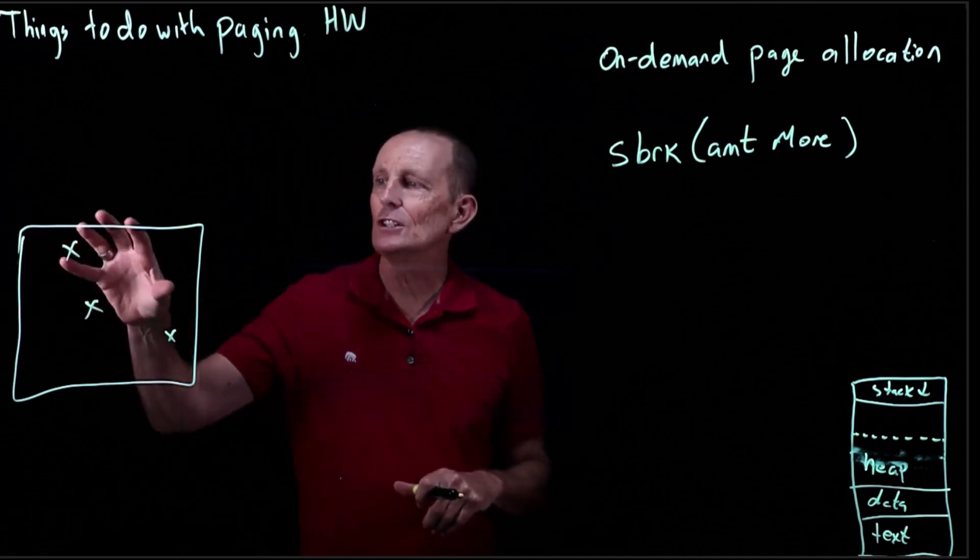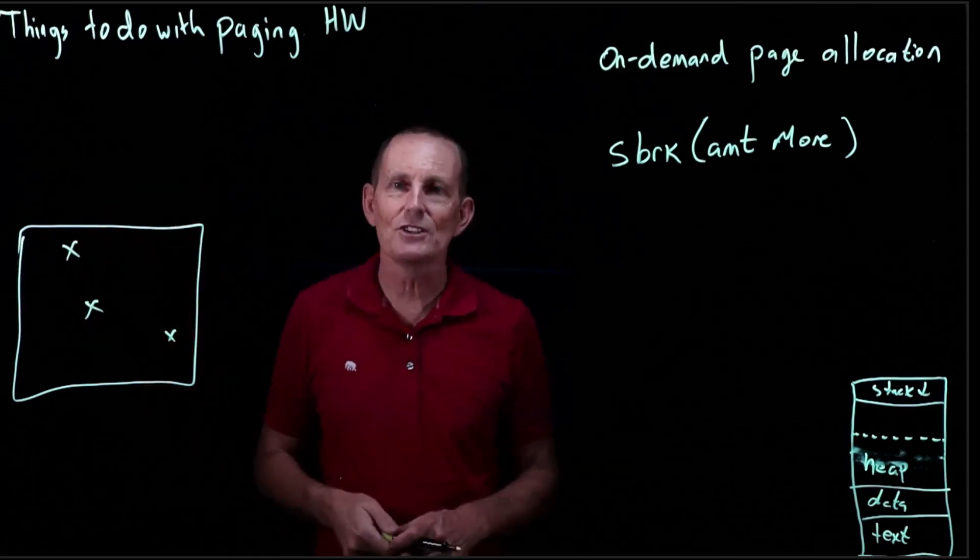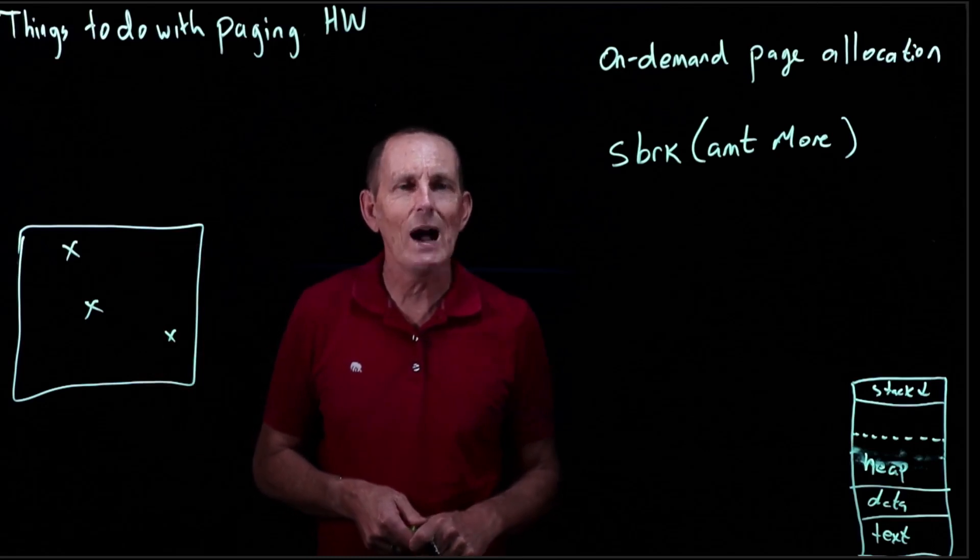So there are many pages in this array. Let's say this array is many pages big. There are many of these pages that are never going to be touched. If that's the case, why ever even allocate them?